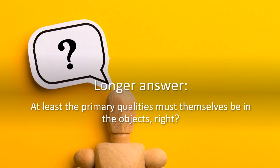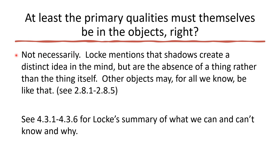You might say: 'What about those primary qualities — those at least have to reflect how things really are, since they're inseparable from the object.' Not so fast. Locke comes up with a great counterexample: shadows create a very distinct idea in your mind, but those shadows are really the absence of a thing rather than the thing itself. Other objects may, for all we know, be like that — the distinct ideas we get of things might be due to absences of one kind or another rather than presences. And he says we're not equipped to know the difference, because all we get to deal with are our ideas at the end of whatever process experiences things.